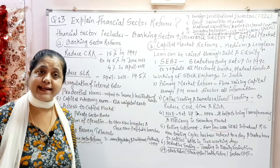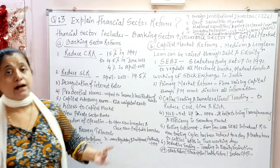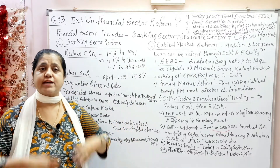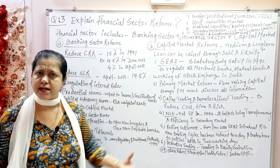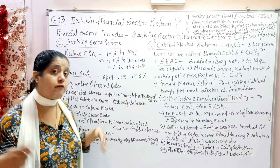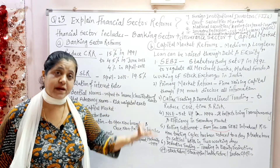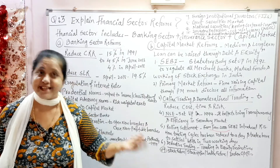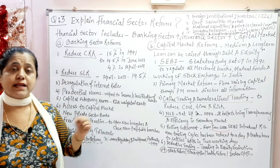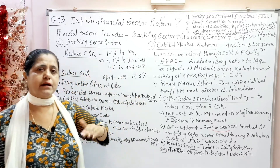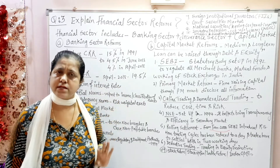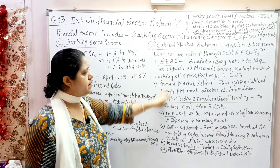Banks were given freedom of operation — they can open new branches not only within the country but also outside. Special Recovery Tribunals were set up to provide legal assistance for recovering bad loans. Out of the 9 banking sector reform points, you can write any 6 to 7 in the exam — it is not necessary to write all points.